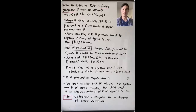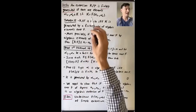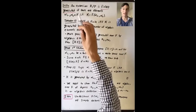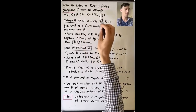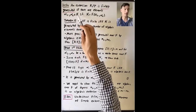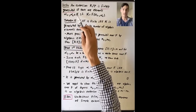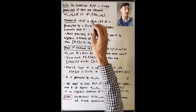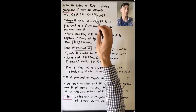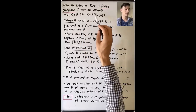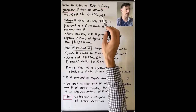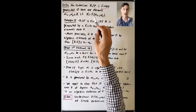We'll start this video with a definition. An extension k over f is finitely generated if there are elements α₁ through αₖ in the field k such that k is the field generated by this finite set of elements α₁ through αₖ over f.